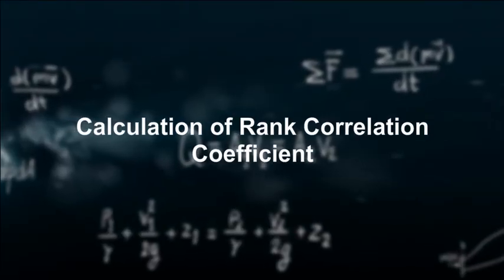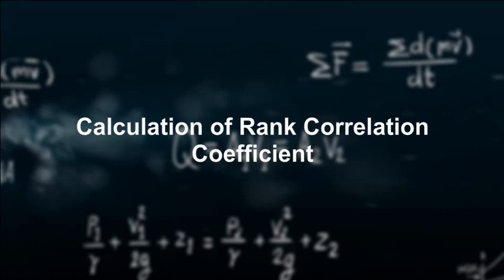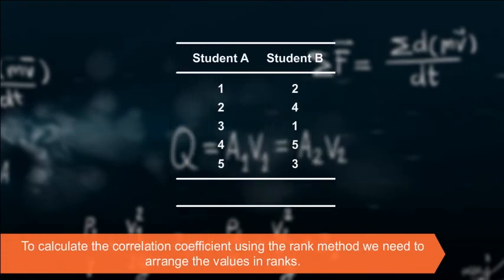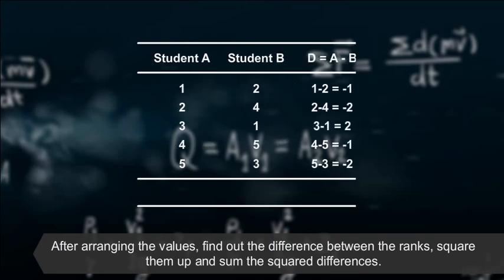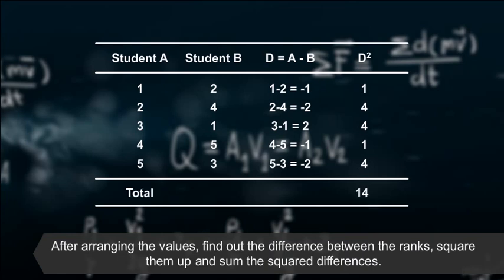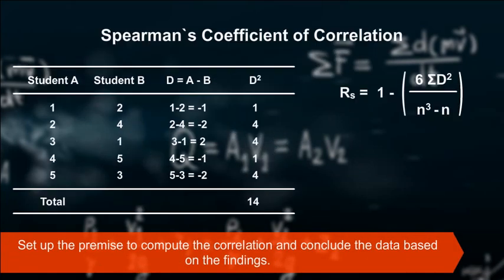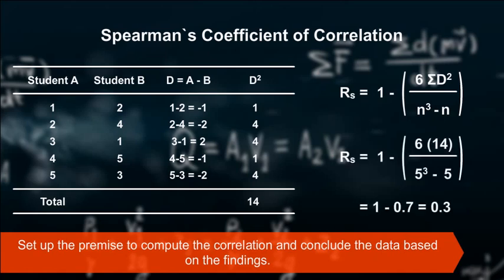Calculation of Rank Correlation Coefficient: To calculate the correlation coefficient using the rank method, arrange the values in ranks, find out the difference between the ranks, square them, and sum the squared differences. Then set up the formula to compute the correlation and conclude the data based on the findings.